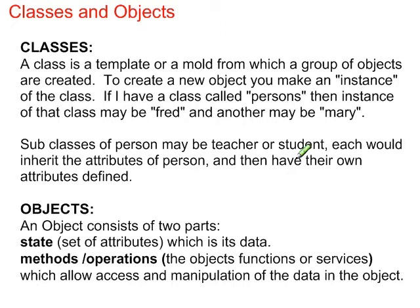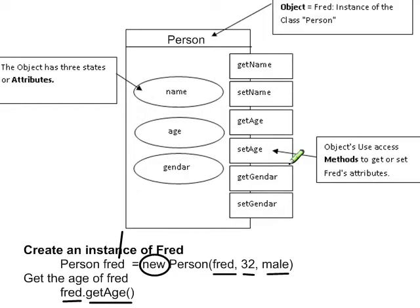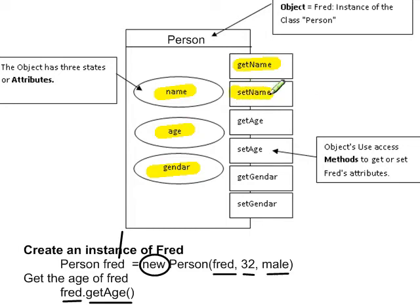The important thing is you can't access the attributes except through those methods and operations, which is the concept of encapsulation. Here's an example of a class — the class is a person. The attributes of a person hold a name, the age, and gender of that person. You can't access that data except through the appropriate methods. So I can access the name by saying get name, or if I want to change it, set name would enable me to change the name. Each of these methods enables me to access or modify the attributes of a person.